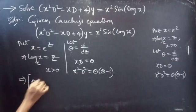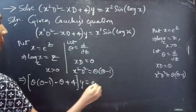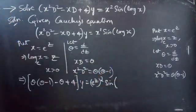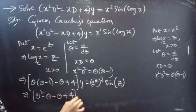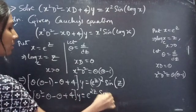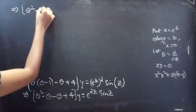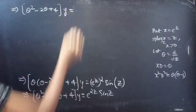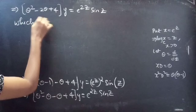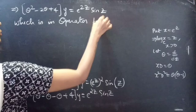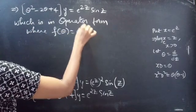Then the above equation becomes: theta(theta minus 1) minus theta plus 4, times y, equals e to the z whole squared times sine of z. Expanding, theta squared minus theta minus theta plus 4 simplifies to theta squared minus 2 theta plus 4, times y, equals e to the power 2z times sine z. So f(theta) equals theta squared minus 2 theta plus 4.